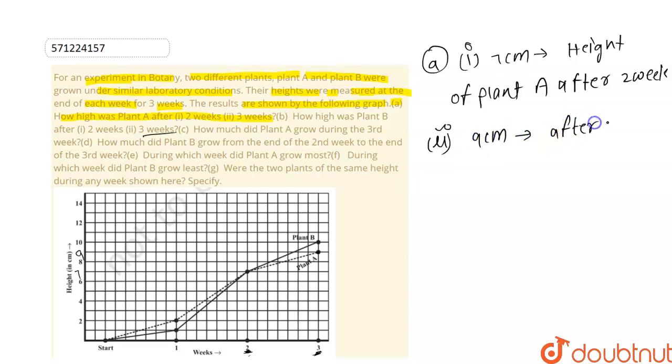After three weeks, the height of Plant A is nine centimeters.